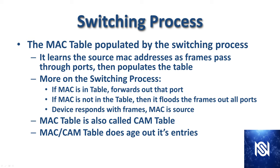The switching process is what populates the MAC table. The switch learns what MAC addresses are associated with what port by looking at the source MAC addresses in the frames as they pass through the ports. When the switch receives a frame, it first looks at the MAC table. If the MAC is in there, it forwards it out that port. If the MAC is not in the MAC table, it floods that frame out of all ports.